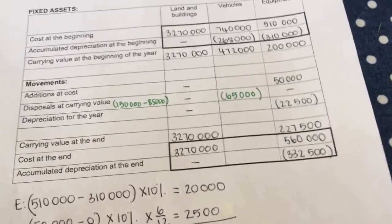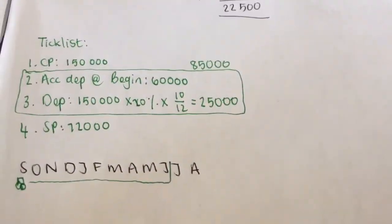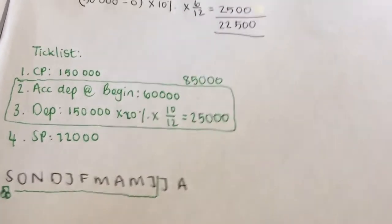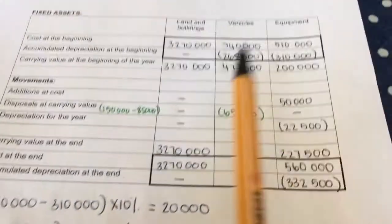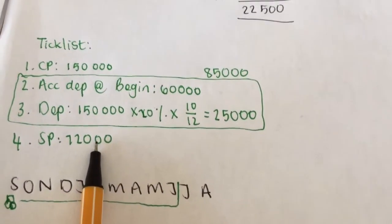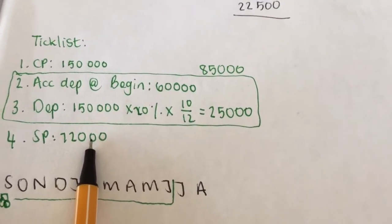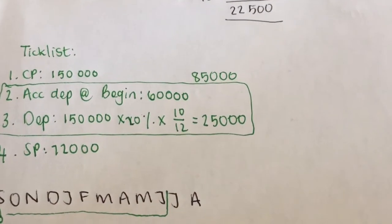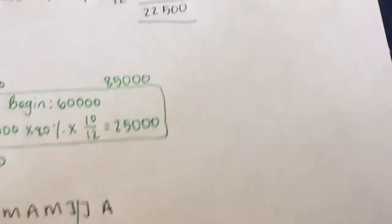That makes it very easy if you had to do an asset disposal account. I now have everything I need in there as well. The carrying value is 65, I'm receiving more than the carrying value so I am making a profit on my vehicle.